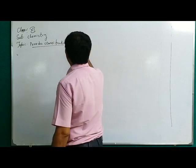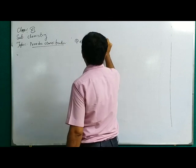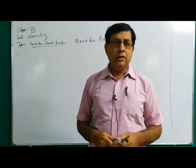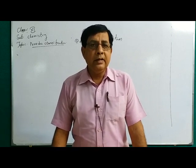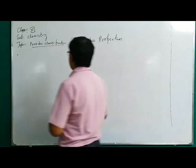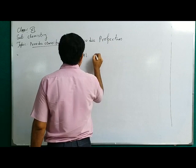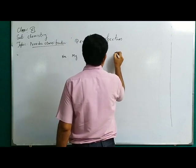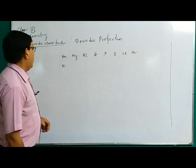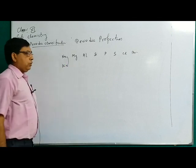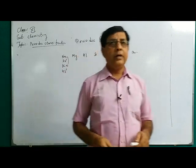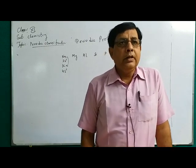What are the periodic properties? Periodic properties are those properties which regularly reappear after a certain interval when we arrange the elements in order of increasing atomic number. For example, going from sodium, magnesium, aluminium, silicon, phosphorus, sulfur, chlorine, argon — when you come to potassium, it has the same electronic configuration as sodium. Sodium is 3s1 and potassium is 4s1 — that is, the same number of valence electrons. So their properties reappear after a certain interval. This is known as periodic properties.